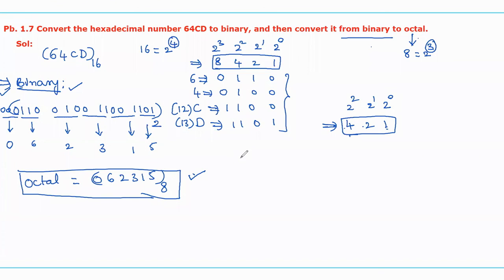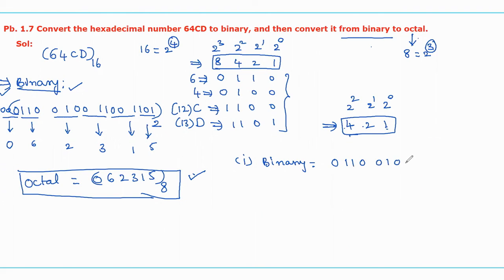Hence, the answer for the first part: binary equals 0110 0100 1101 with base 2. Whereas for the second part, the octal value is equal to 062315 with base 8.